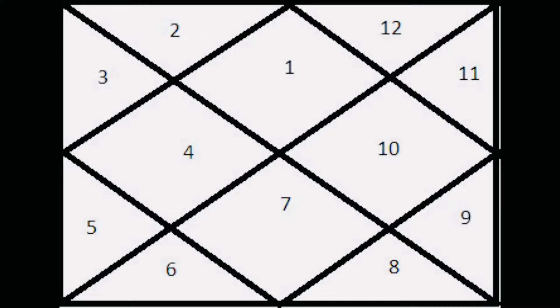Every house signifies something in astrology. Like for example, first house where the number one is written is your ascendant. It's you, it's your body. And the opposite of one is seventh, which is your spouse. That seventh house signifies your spouse. So we'll discuss about each and every house in separate videos, don't worry about that.